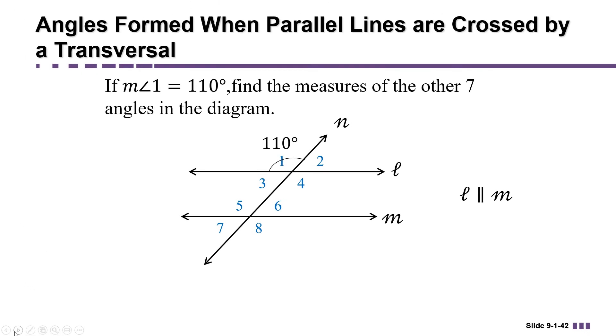So with all of these equalities together with other relationships we've already learned about angles, if you know even one angle in this diagram you can figure out the rest. So for example, if angle 1 is 110 degrees we can use that to figure out the rest of the angles.